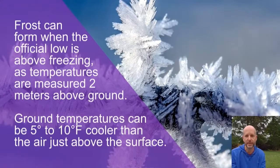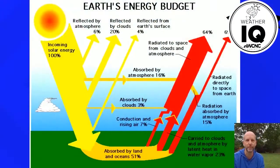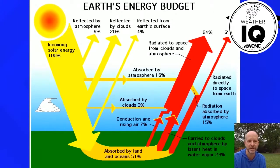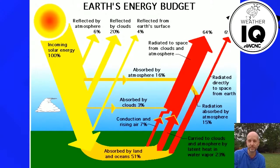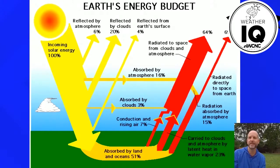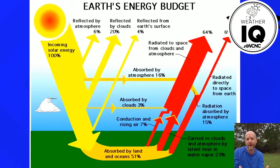Everything has some kind of heat. On nights where we have clear skies, if you have an object out in the middle of the yard it can radiate heat away. During the day, incoming solar radiation comes down — some of it is reflected by the atmosphere, clouds, and the earth's surface and bounces straight back up, some is absorbed by the atmosphere through various gases, and some is absorbed by clouds.